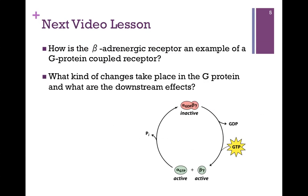In our next video lesson, we want to look at a specific example of a G-protein-coupled receptor — the beta-adrenergic receptor. We also want to see what kind of changes take place in that G-protein and what the downstream effects are.